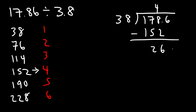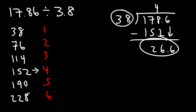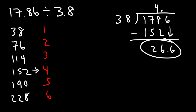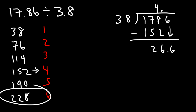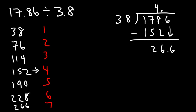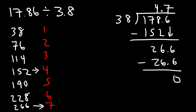Bringing down the .6, since 38 doesn't go into 26.6 we add a decimal point and treat this as 266. Extending the list: 228 plus 38 is 266, so 38 goes into 266 exactly seven times. Since 38 times 0.7 is 26.6, our final answer is 4.7.